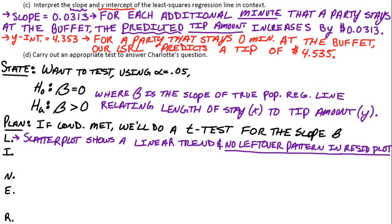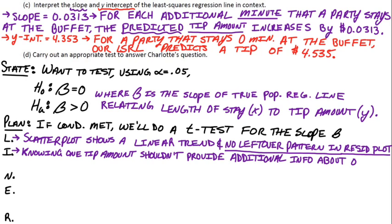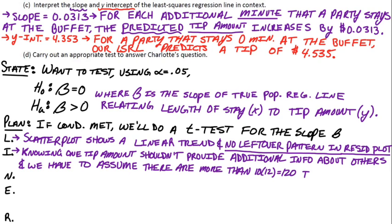So the I in LINER stands for independent. And we can say that in two different ways here. We can say, well, knowing the tip amount from one group shouldn't provide any additional info about the other groups. They're independent of each other. And further, if we think about all the different groups that would eat at this restaurant, you'd have to assume there's at least 10 times the sample size, 120 tips in this case, for this restaurant. So we should be good with the 10% condition as far as the tips are concerned. Not to mention, the tips themselves should be independent of each other.